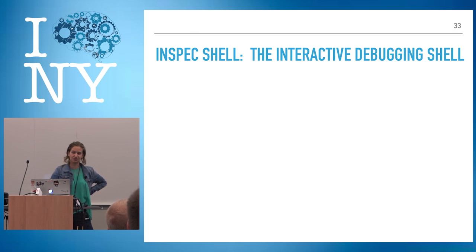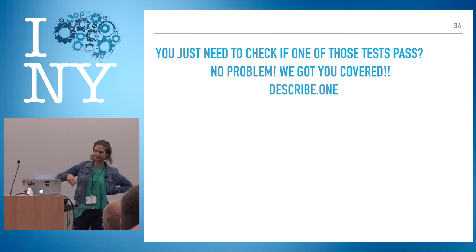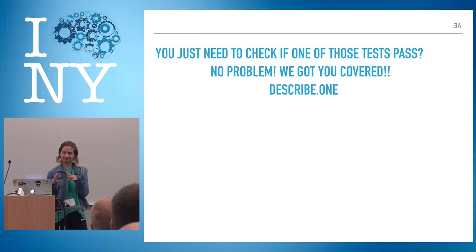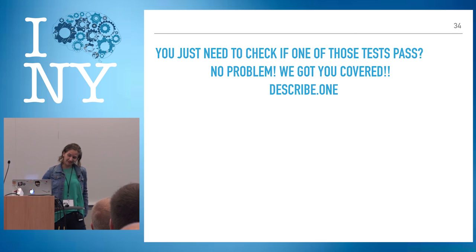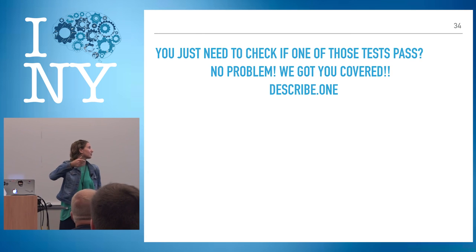The InSpec shell will also help you write tests because you can get help on all the resources that InSpec has. Another cool thing is describe.one — if you have a test and you just need to check if one condition passes, describe.one will pass if either condition passes. So it'll be marked as passing if the SSH config protocol is 3 or the protocol is 2, allowing a little more flexibility in your tests.